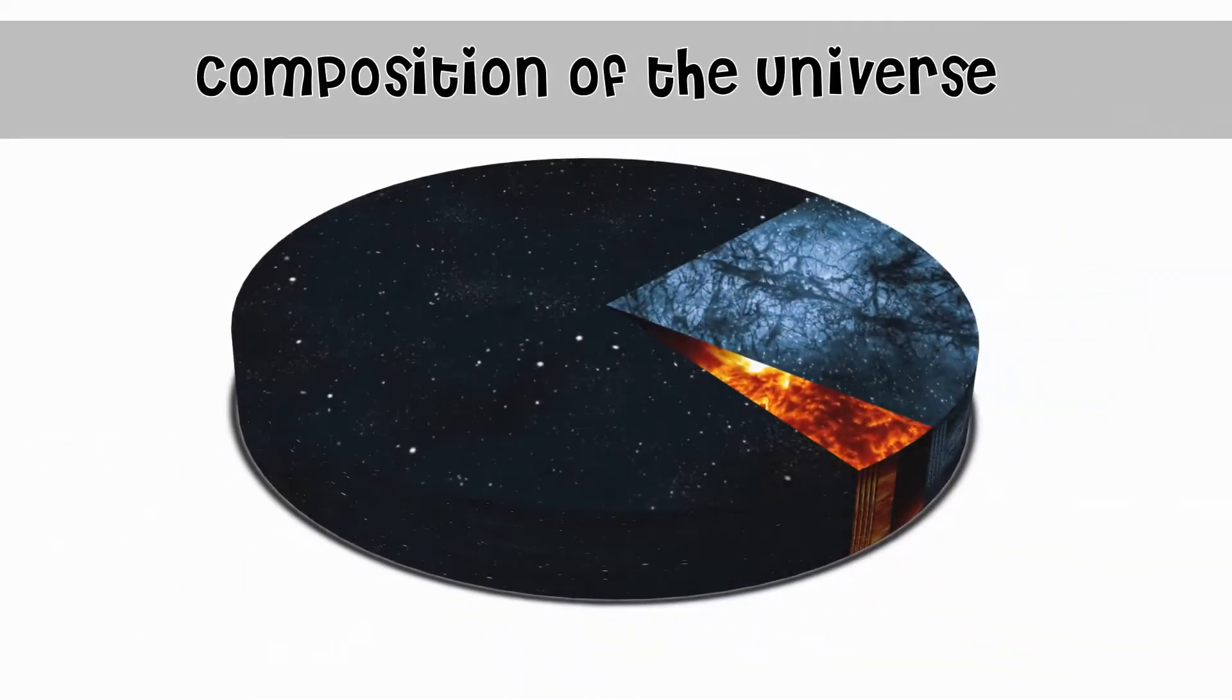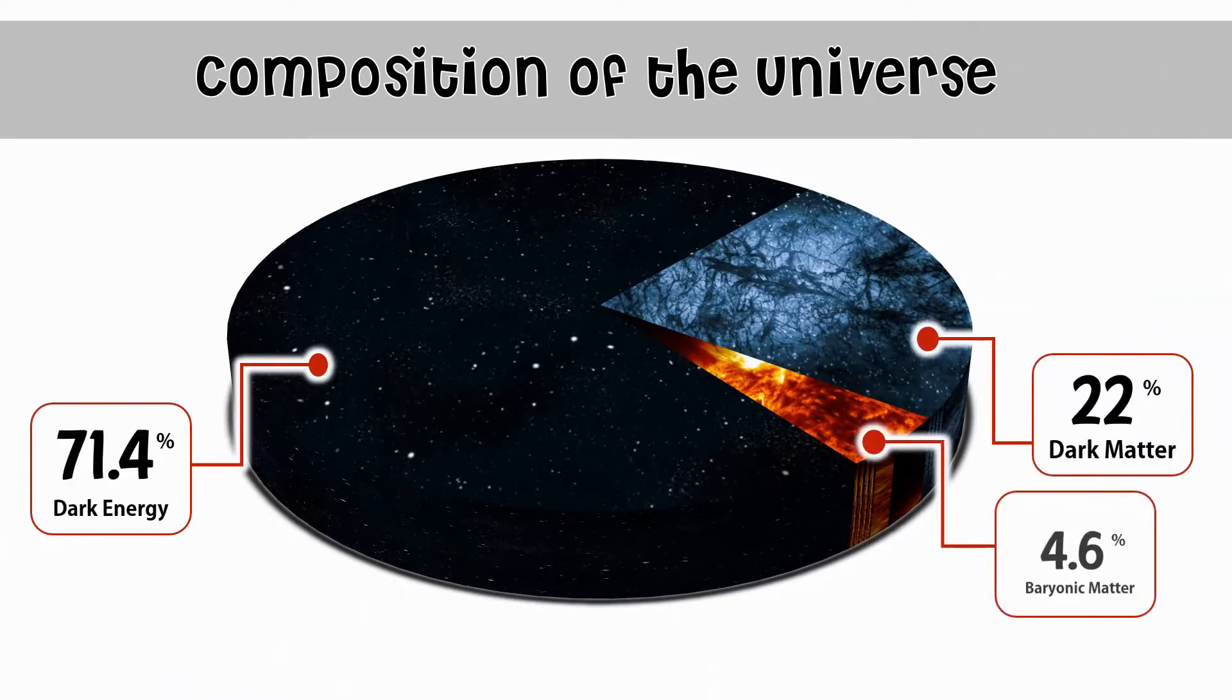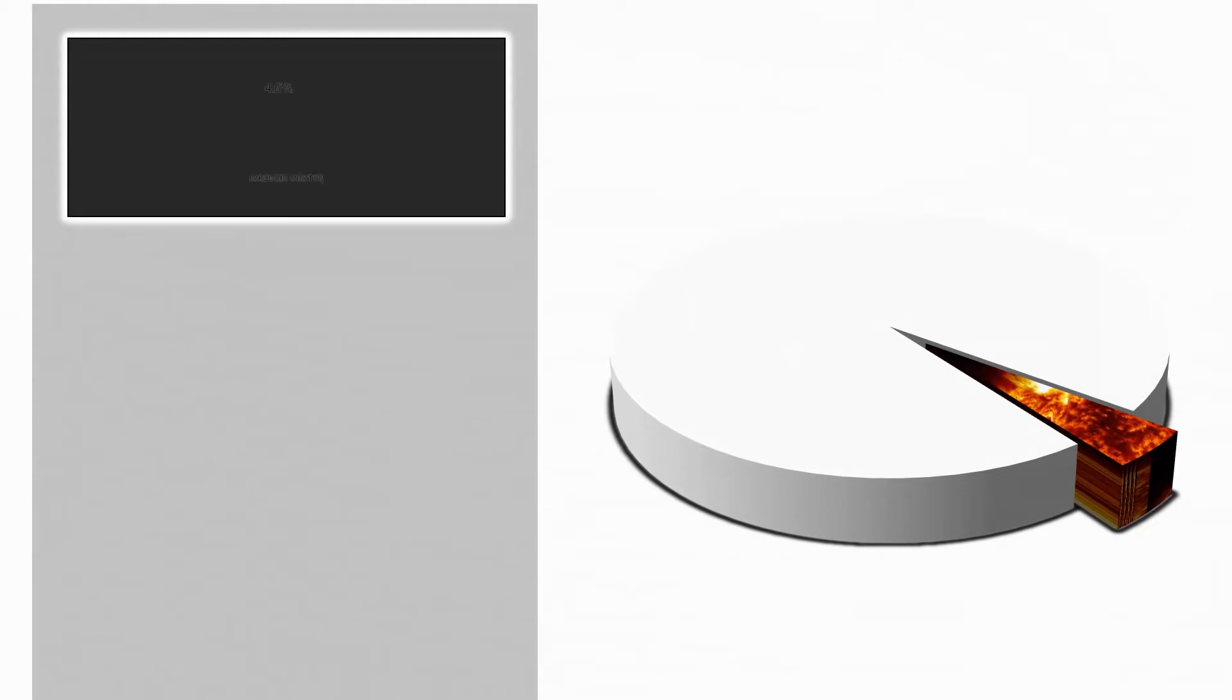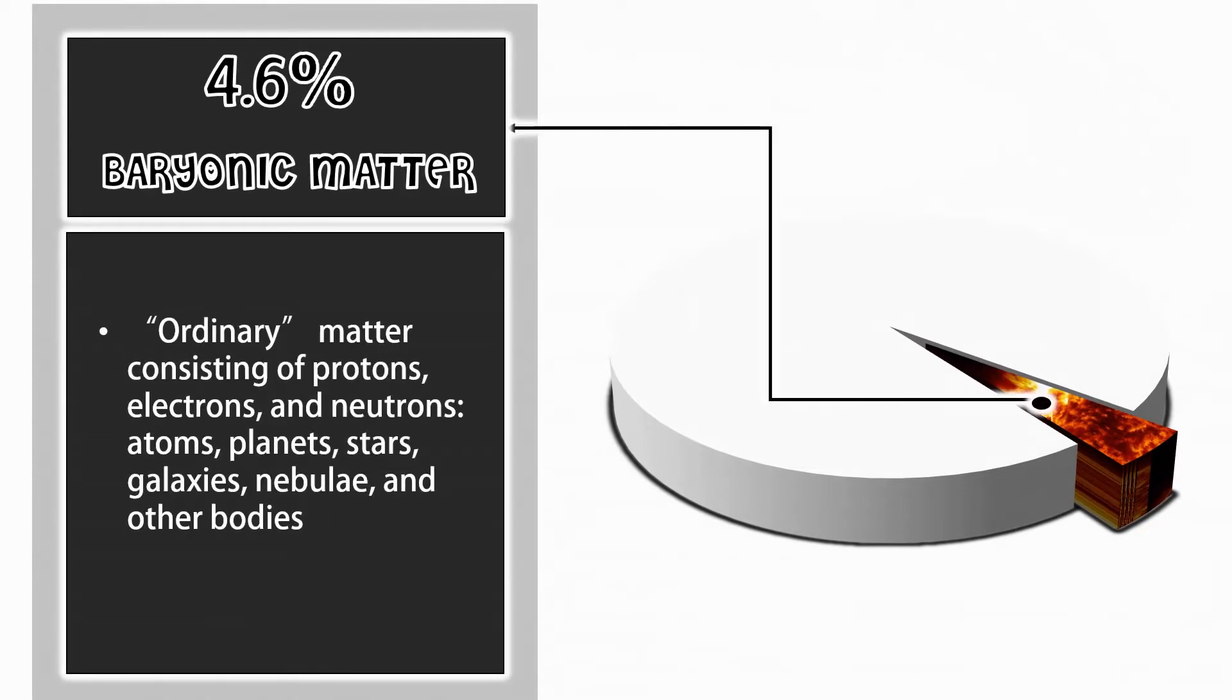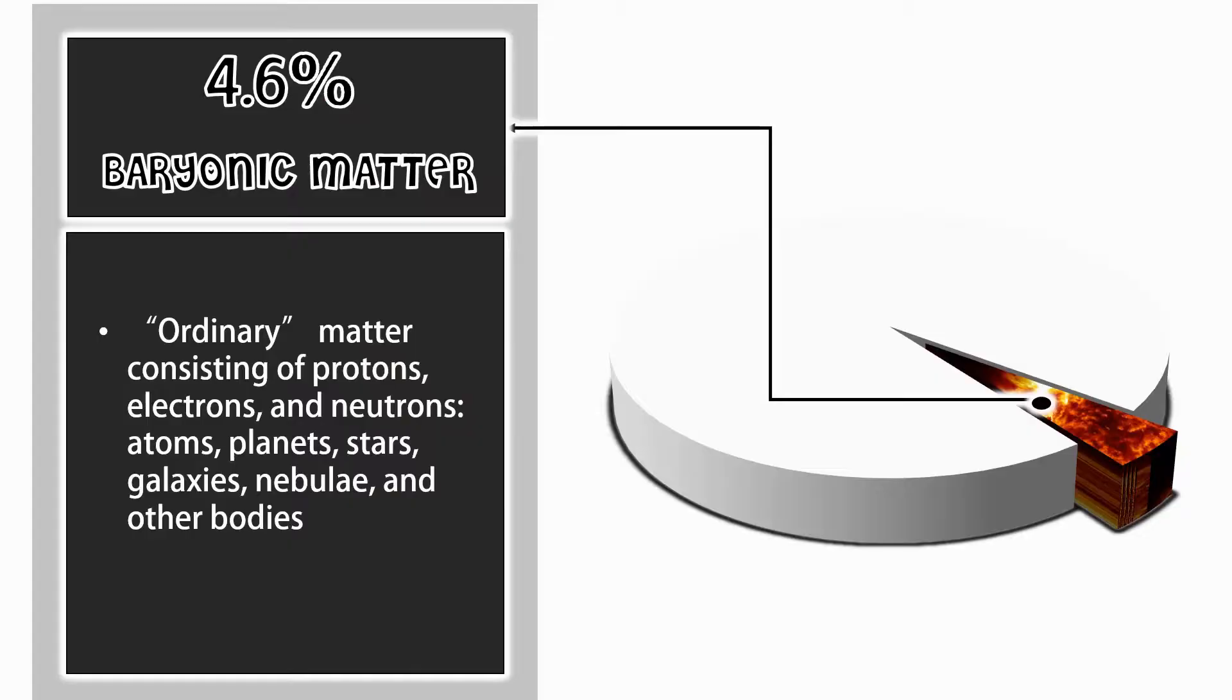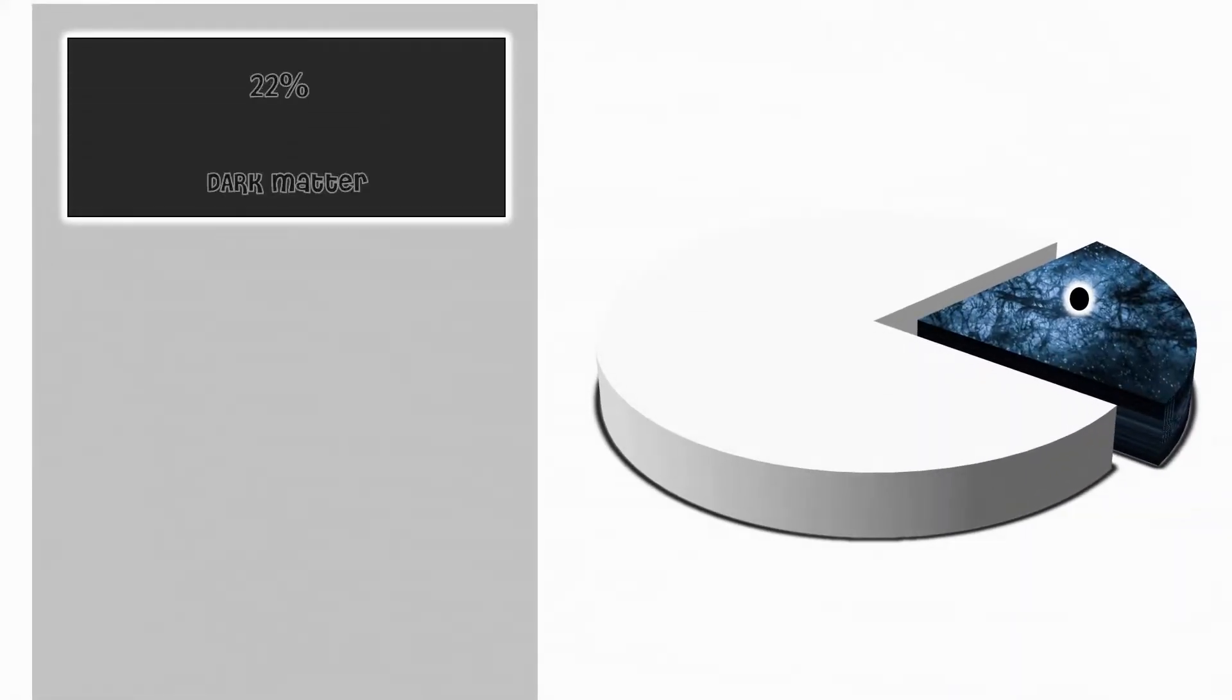The universe is composed of energy and matter: approximately 71.4% dark energy, 23-24% dark matter, and 4.6% baryonic matter.